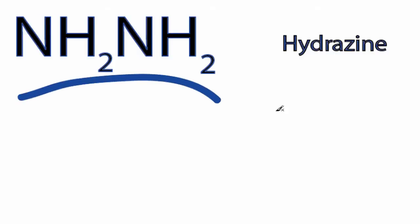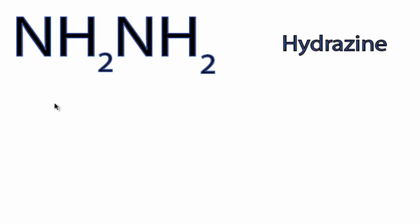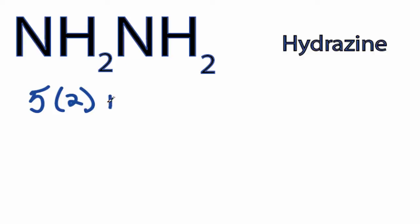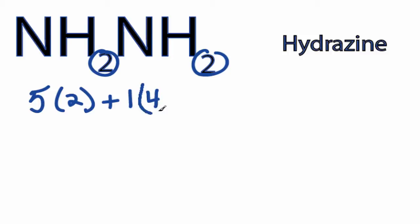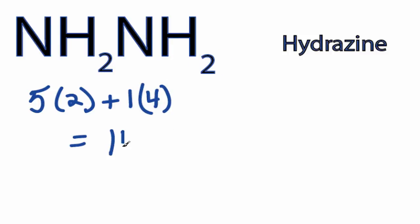This is the NH2NH2 Lewis structure, hydrazine. Nitrogen has 5 valence electrons, but we have 2 Nitrogens, so we'll multiply that by 2. And Hydrogen has 1 valence electron, but we have 2 plus 2, 4 Hydrogens, for a total of 14 valence electrons for NH2NH2.